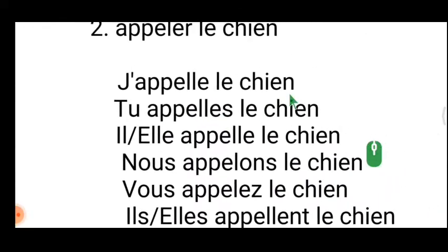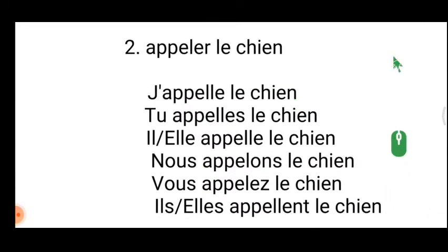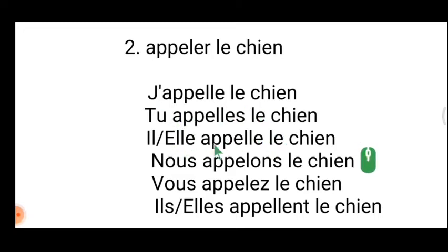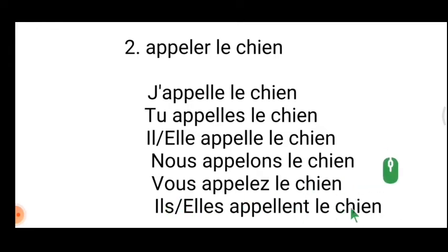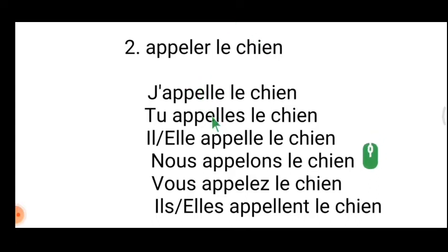'Appeler le chien' — 'j'appelle, tu appelles, il appelle, nous appelons, vous appelez, ils appellent.' The difference is: the infinitive verb has only one 'l,' but in conjugation it gets two 'l's — except for 'nous' and 'vous' which keep only one single 'l.' That is the special rule of this verb.